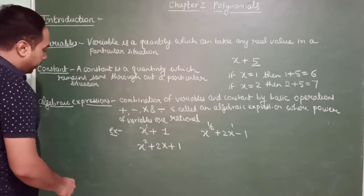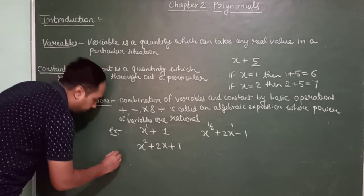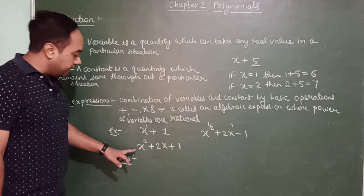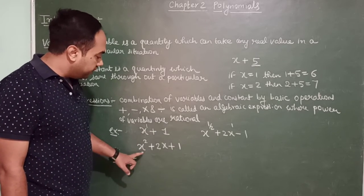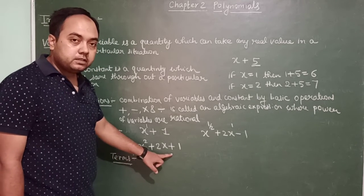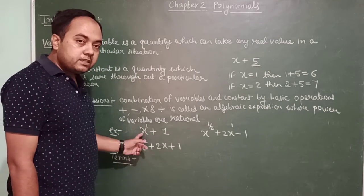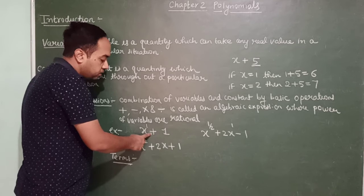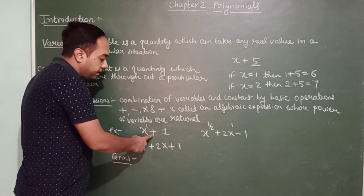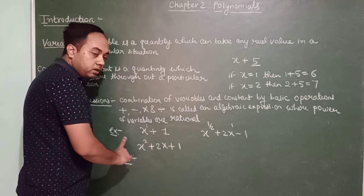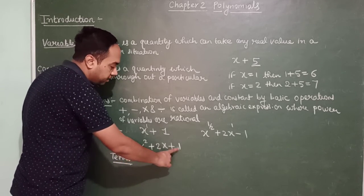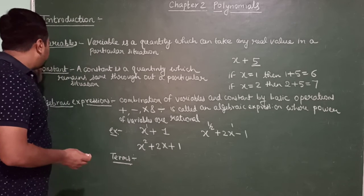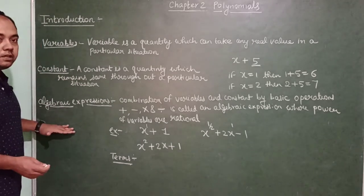Now one more thing we can add here is the concept of terms. Terms are the various parts of an algebraic expression which are separated by basic operators. In x plus 5, the operator is plus, so there are two terms. In x squared plus 2x plus 1, there are three terms. Similarly, in the third example, there are also three terms.